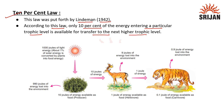Here's an illustration regarding the same. We know the sun is the ultimate source of energy. In this case, the sun is providing 1000 joules of light energy, out of which 1% of the solar energy is converted into food energy by plants through the process of photosynthesis, whereas the remaining 990 joules of energy is lost to the environment.